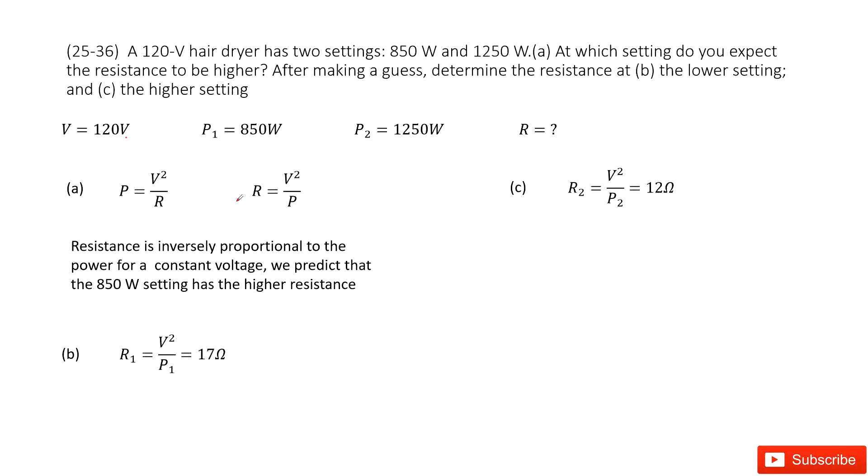Now we can do this calculation by inputting the values. We can see R1 equals V squared over P1. So input these given quantities, you get R1 as 17 ohms.